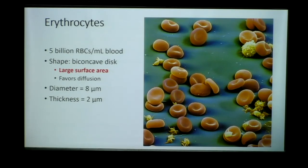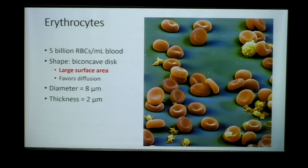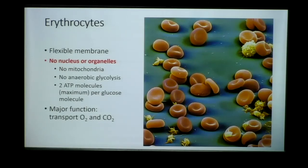The biconcave shape gives red blood cells a large surface area, which is important for diffusion. Even the slightest change in this shape can lead to dysfunction in the oxygen-carrying capacity of the cell. We'll go on to talk about sickle cell, which is an abnormal shape where cells lose this biconcave disc shape. Also because of proteins on the membrane, red blood cells have a flexible membrane, allowing them to squeeze through tiny spaces like capillaries, the spleen, and the liver.